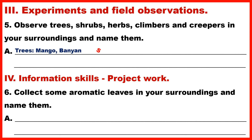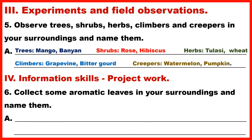Answer – Trees: Mango, Banyan. Shrubs: Rose, Hibiscus. Herbs: Tulsi, Wheat. Climbers: Grapevine, Bitter Gourd. Creepers: Watermelon, Pumpkin.